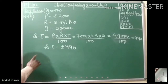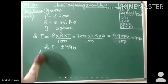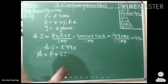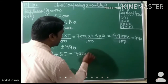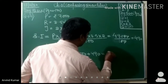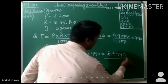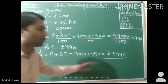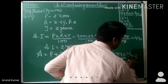We have to calculate the amount to be paid at the end of the second year. Therefore, amount is equal to principal plus simple interest, which is equal to 7,000 plus 490, which is equal to rupees 7,490. Therefore, amount to be paid at the end of the second year is rupees 7,490. This is the required answer.